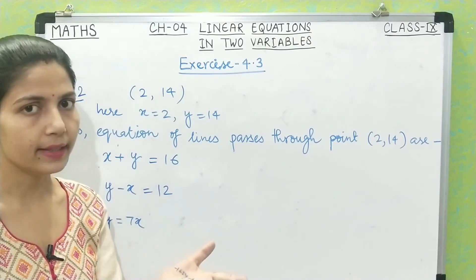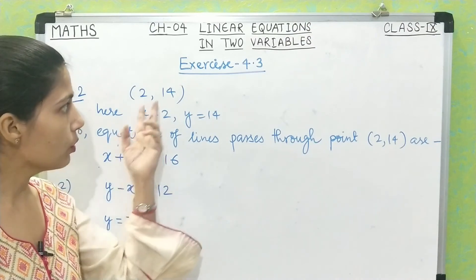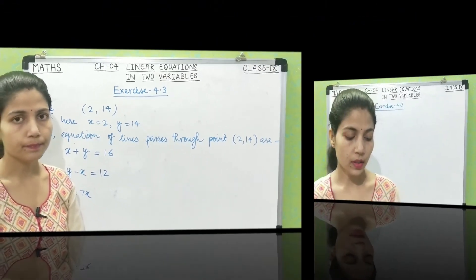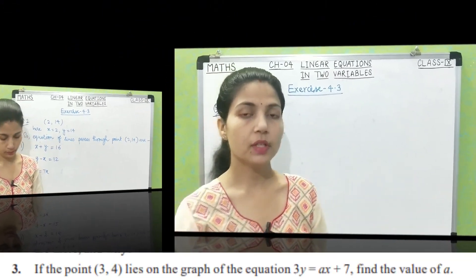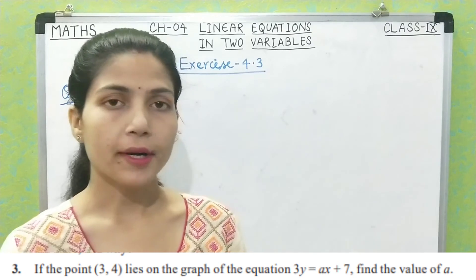How many more lines can pass through this point? Since (2, 14) is one point in the plane, and from any single point in a plane you can draw infinite lines, there are infinitely many lines passing through this point.